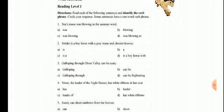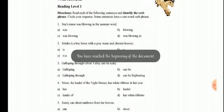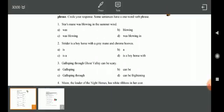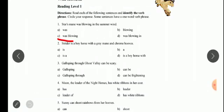For example, in the first one you can see 'Stars was blowing in the summer wind.' In that sentence I've given four options, so which one is the correct verb phrase? According to this, the correct verb phrase is 'was blowing.'